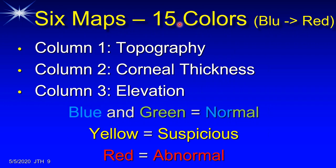The six maps use 15 primary colors from blue to red — chosen because clinicians cannot distinguish more than 15 primary colors. Column one is topography, column two is corneal thickness, and column three is elevation. Blue is normal or better than normal, green is normal, yellow is suspicious, and red is abnormal.